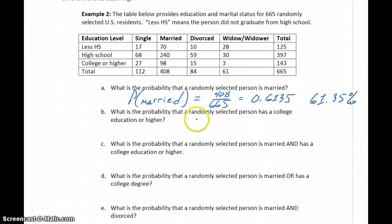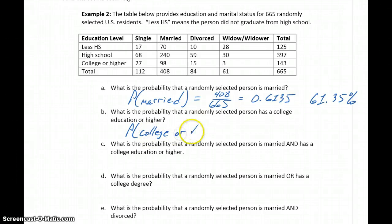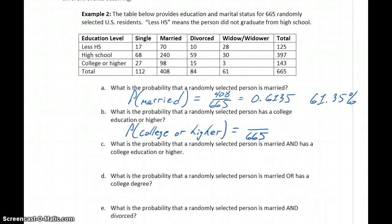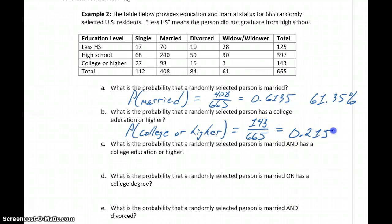In part B, what's the probability that a randomly selected person has a college education or higher? We're still selecting out of that group of 665. Looking at the people who have a college education or higher, there are 143 people. So 143 divided by 665 gives us 0.2150, or about 21.50%.